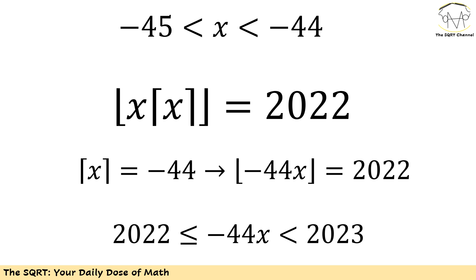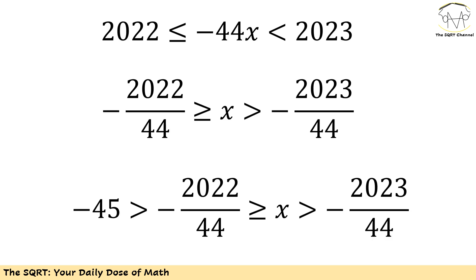So -44x is between 2022 and 2023, with equality on the lower side again. If we divide everything by -44, we need to flip the inequality signs, giving us x greater than -2023/44 and less than or equal to -2022/44.